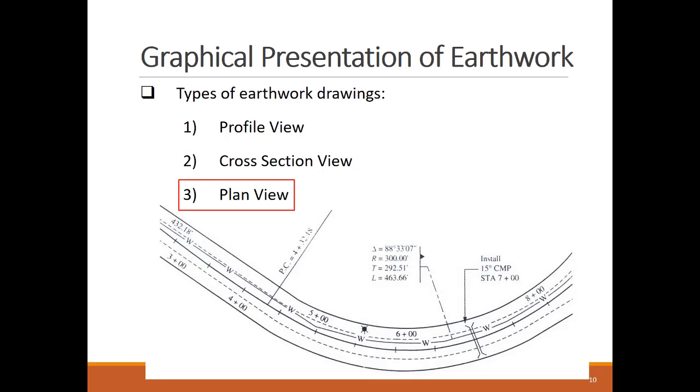Finally, the plan views provide an aerial view of parts of the project. As you can see, this plan view describes the horizontal alignment of a stretch of a roadway project. Also, it shows the need to install a CMP, corrugated metal pipe, for drainage at station 7.